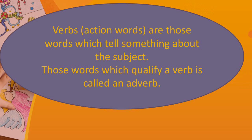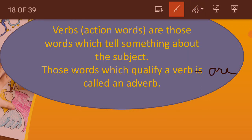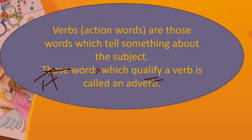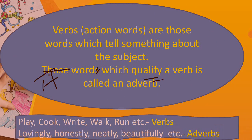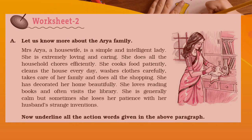That we have already done. Verbs are those words which tell something about the subject. A word which qualifies a verb is called an adverb. We have studied verbs and adverbs in detail. Play, cook, write, walk, run — these are all verbs. Lovingly, honestly, neatly, beautifully, clearly, slowly, fast — these are all adverbs.